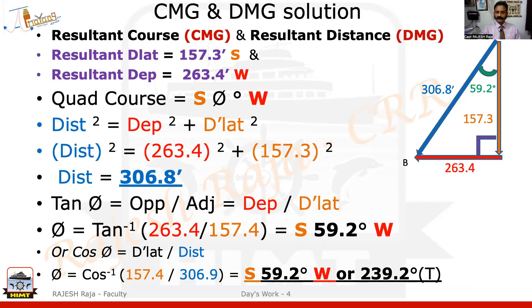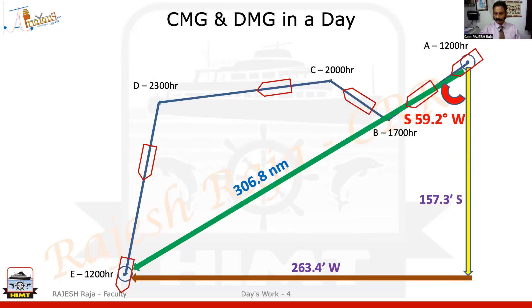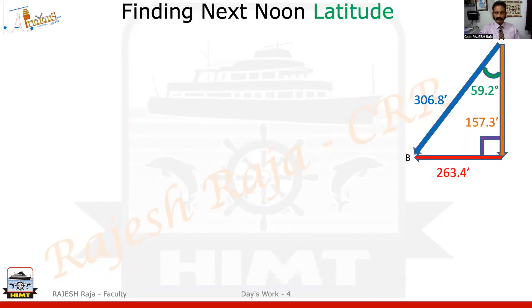Quickly on this page, I'm going to show you the values of DMG and CMG: 306.8 and S59.2°W. So we have finished till here, and that is what this picture shows — which was the last slide of the previous video. So the whole triangle is complete. As far as the individual breakups had to be done, I have finished. Now my final job is to find the next day's noon position.